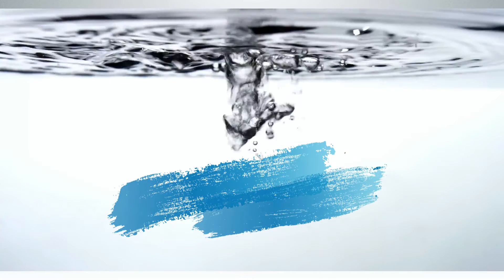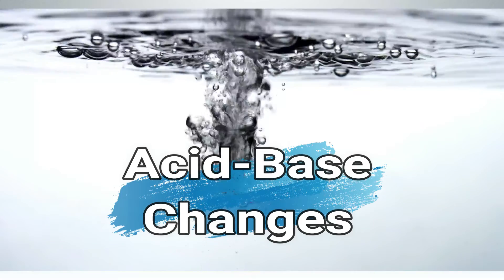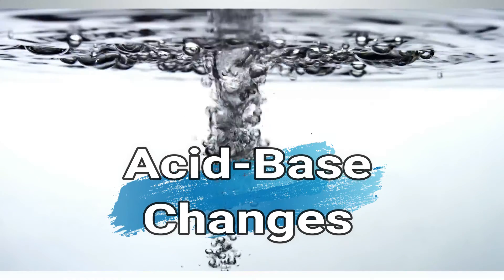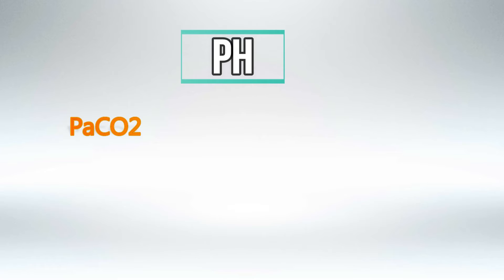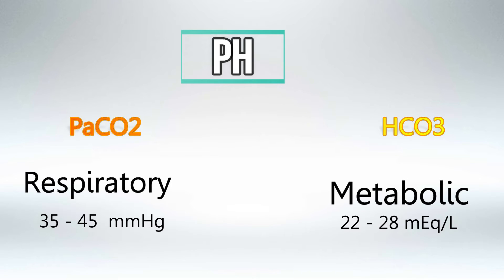Welcome back. In this video, we'll be talking about the acid-base changes — respiratory and metabolic acidosis and alkalosis — and we'll have a mnemonic for everything so you can remember it. From the word pH, P stands for pressure of arterial carbon dioxide, and H stands for bicarbonate. Whenever you hear respiratory alkalosis or acidosis, it means there's a change in the pressure of arterial carbon dioxide. And whenever you hear metabolic acidosis or alkalosis, it means there's a change in the concentration of bicarbonate.